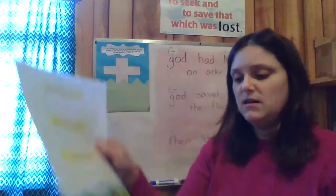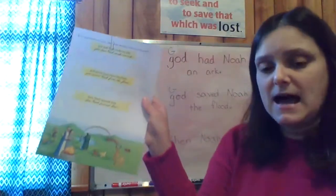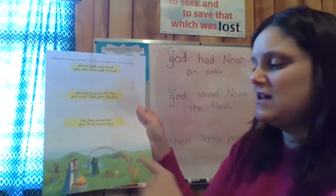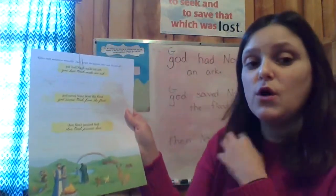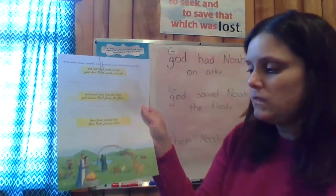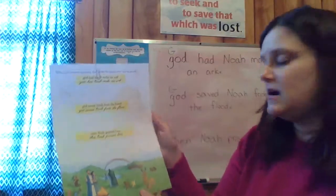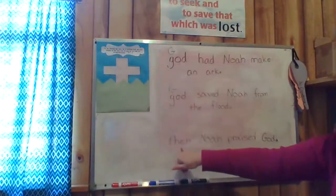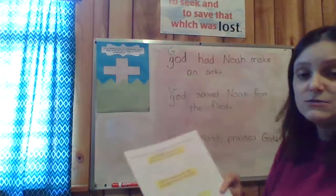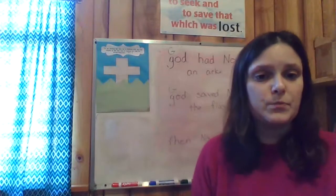After they were saved from the flood and back on dry ground, we see the rainbow. The rainbow was put in the sky as a promise from God that he would never destroy the whole earth again with a flood. Then Noah built an altar to give thanks to God — and that's what our third sentence says: 'Then Noah praised God.'